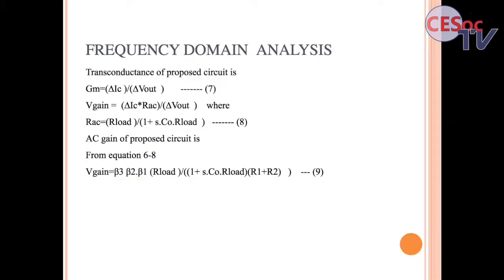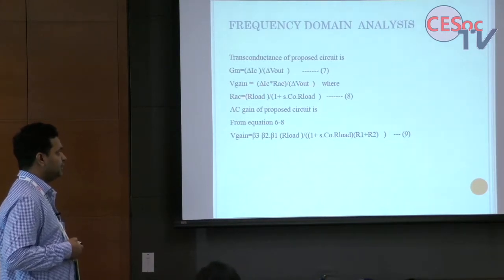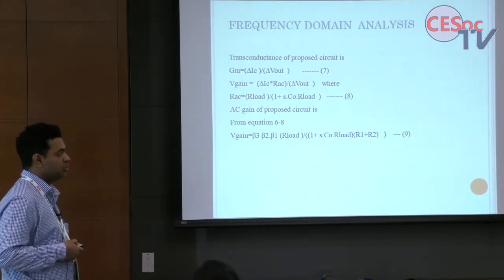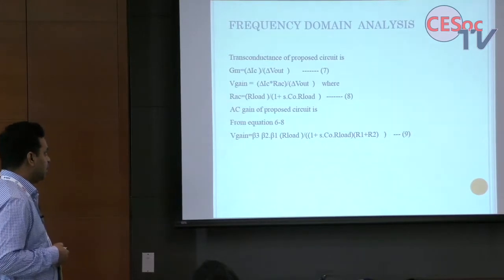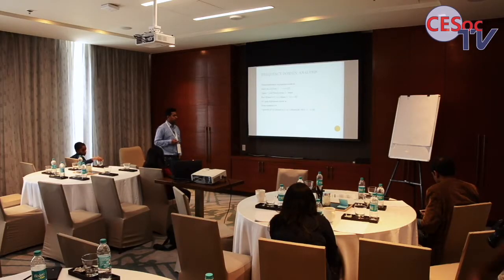This operates as a transconductance feedback control, with G_m equal to delta I_C divided by V_out. The voltage gain is delta I_C times the parallel impedance of C_out and R_load, written as R_SC where R_SC is R_load parallel with 1/sC. The overall gain of the system is beta_3 times beta_2 times beta_1 times R_load, divided by this factor.